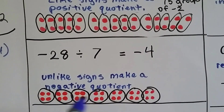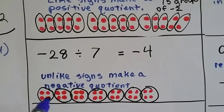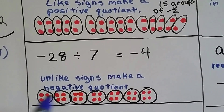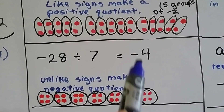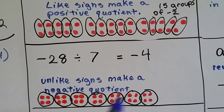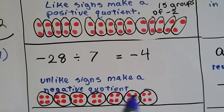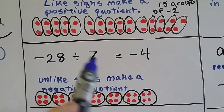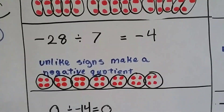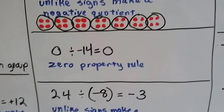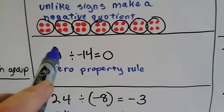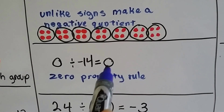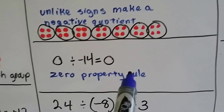If I have 28 red negative chips and I divide them into 7 groups, there's going to be negative 4 chips in each group. And because they have unlike signs, I'm going to have a negative quotient. If I've got 0 and I divide it by negative 14, it's going to be 0.